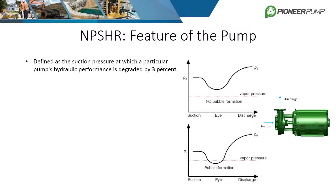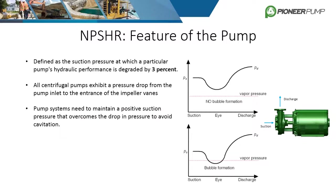NPSHR is defined as the suction pressure at which the pump's pressure output is degraded by 3%. The image illustrates what happens to the pressure of the fluid at the eye of the impeller. Pump systems need to maintain a positive suction pressure that can overcome the drop in pressure to avoid crossing the vapor pressure line. If the pressure drops below the vapor pressure line, vapor bubbles start to form at the eye of the impeller. As the bubbles move from the eye to the outer edge, the pressure increases and causes the bubbles to collapse or implode. This is the definition of cavitation.